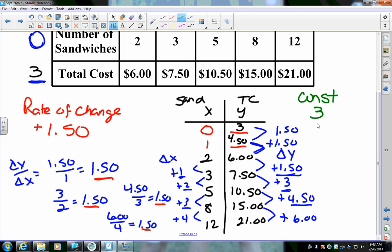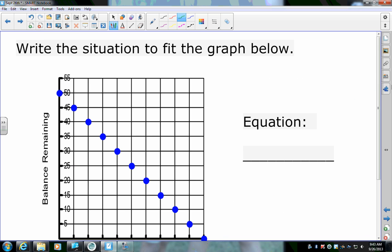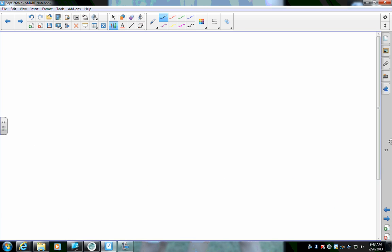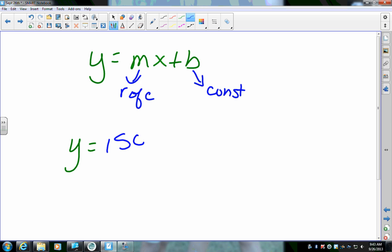Now, I found my constant, I found my rate of change, and I should be able to write my equation. My equation, y equals mx plus b. Remember, m is my rate of change. B is my constant. So, I have y equals, what was my rate of change? $1.50. Well, if I were to put $1.50 plus $3, what am I missing? My x. Where does the x go? So, the x always goes with the coefficient or the rate of change. So, now, here is my equation.